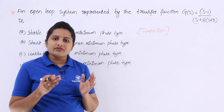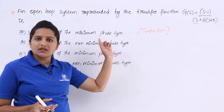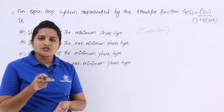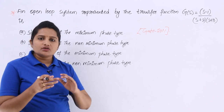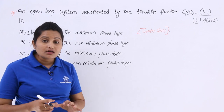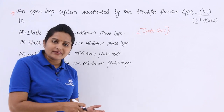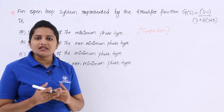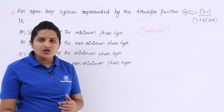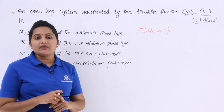We already discussed this when introducing polar plots. Here once again, coming to minimum phase type: if all the poles and zeros — please underline that word. In the previous case when discussing stability, I mentioned poles only, but here I am mentioning zeros also. Whenever all the poles and zeros are on the left half of the s-plane, then only we can say that system is a minimum phase system.